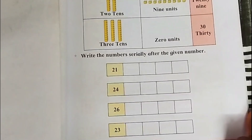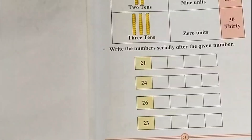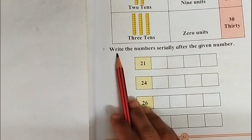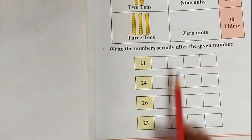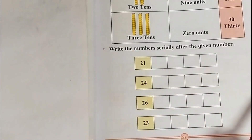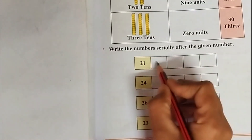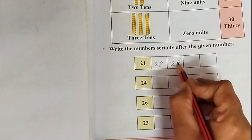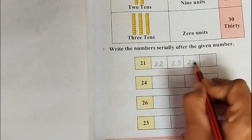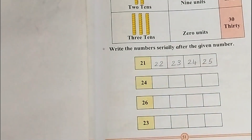All the activities given in our textbook. Write the numbers serially after the given number. You have to write them in serial order — the number which comes next. After twenty-one comes twenty-two, after twenty-two comes twenty-three, after twenty-three comes twenty-four, after twenty-four comes twenty-five.